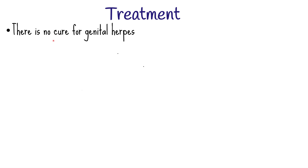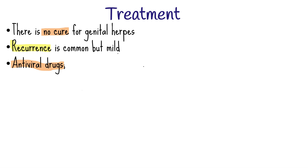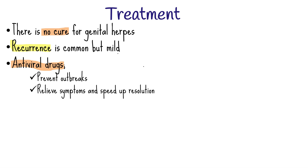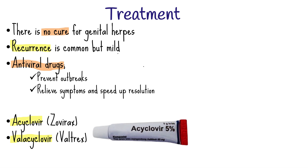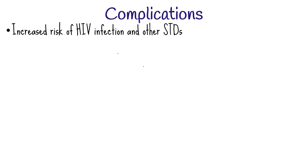Unfortunately, there is no cure for genital herpes, and that's why it is a lifelong disease. Recurrence of the infection is common, causing later outbreaks that are usually milder than the first outbreak. Antiviral drugs have been used and they have the potential to prevent outbreaks, relieve symptoms, and speed up their resolution. Antiviral medications that may be helpful for genital herpes include acyclovir and valacyclovir. If left untreated, genital herpes can result in complications such as an increased risk of HIV infection and other sexually transmitted diseases, as well as severe emotional stress for the patient and family.